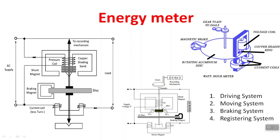This is the 3D view. This is the pressure coil, also called the voltage coil. These are the copper shading rings or copper bands. These are the current coils and the braking magnet. The gears are connected to the registering system. The energy meter is also known as a Watt-hour meter. I hope you understand the working and operation of the energy meter.